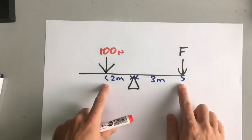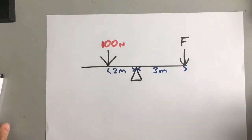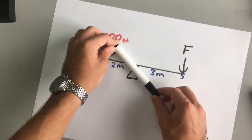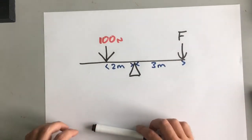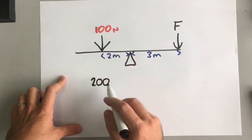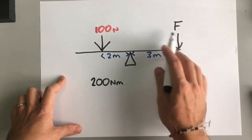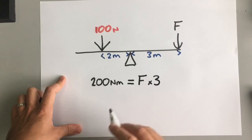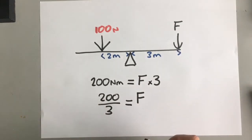So what force would we need to perfectly balance this beam? We can work it out using our formula for moments. Moment is force times distance. If it's balanced, the clockwise and anti-clockwise turning forces are equal — there will be no movement, it will be in equilibrium. So here, force times distance is 100 × 2 = 200 newton metres. The moment on the other side is F × 3, so F = 200 ÷ 3 newtons.